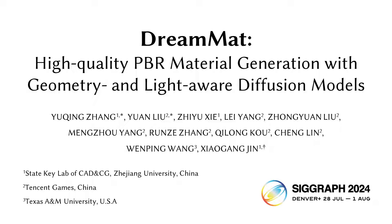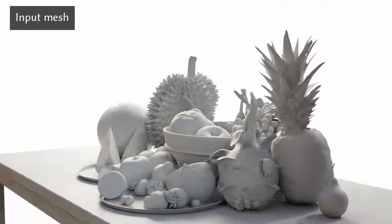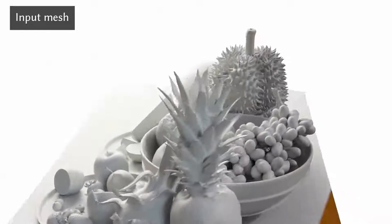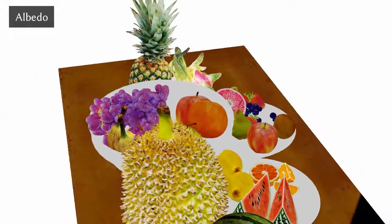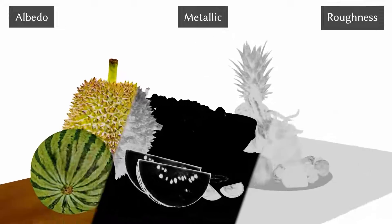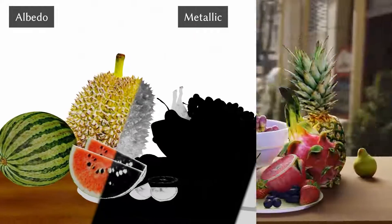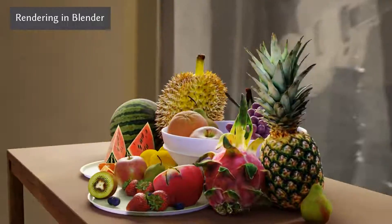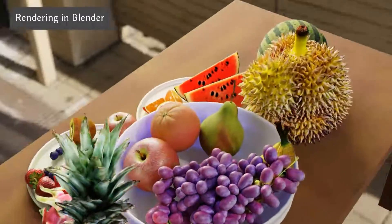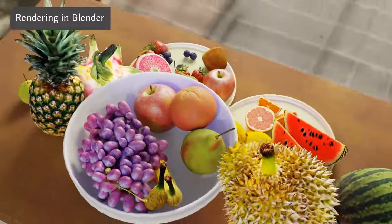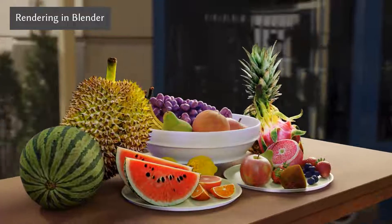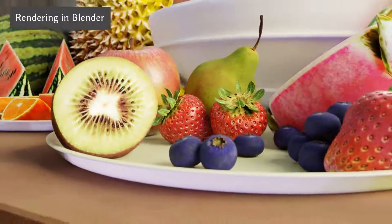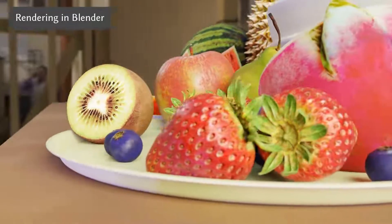We present DreamMat, a novel method for creating high-quality PBR materials for untextured 3D meshes using text descriptions. We use text prompts to automatically generate PBR materials, including albedo, roughness, and metallic for all of the fruits in the scene. These materials are free of shading effects and can be imported directly into modern graphics engines like Blender for rendering. The results in various lighting conditions are photorealistic, demonstrating the effectiveness of our approach in creating visuals that closely resemble real-world appearances.